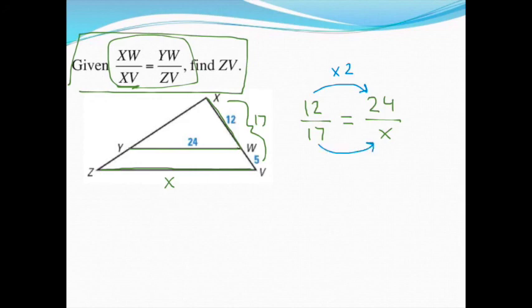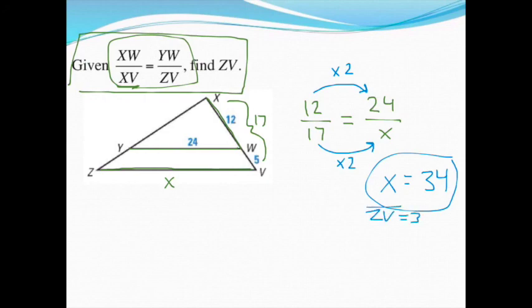So I'd have to do the same thing on the bottom to get this proportion to work out. So multiplying 17 by 2 gets me an x value of 34. If you don't believe me that that works, go ahead and use a proportion, cross multiply and divide, or solve the proportion by cross multiplying and then dividing. And you'll see that, yeah, x is 34. Or I guess I should say ZV. The segment ZV is 34.